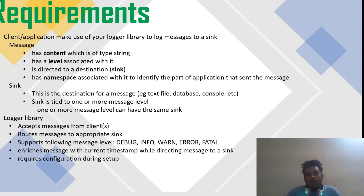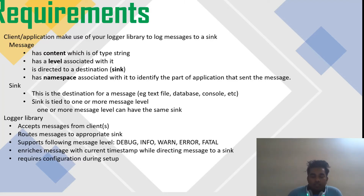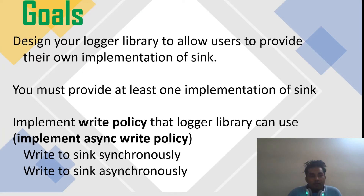Whatever the user specifies — for instance, logging a particular message to a text file — the library routes that message to the text file. It must support the following message levels: debug, info, warn, fatal, and error. It also needs to address a message with the current timestamp while directing it to the sink, so you append a timestamp to the message string indicating when it was written. It also requires configuration during setup.